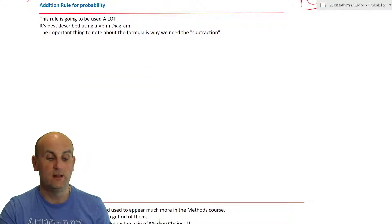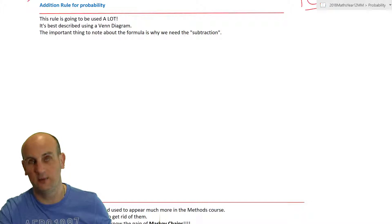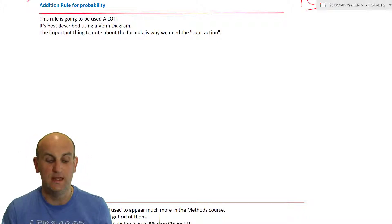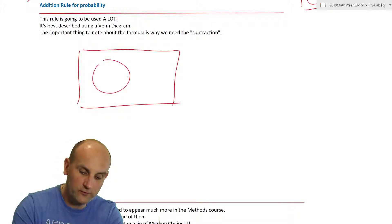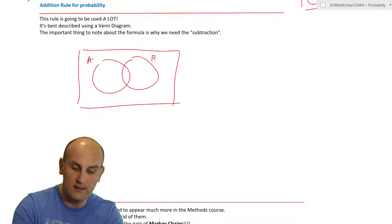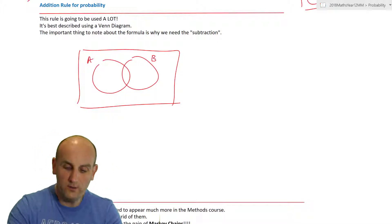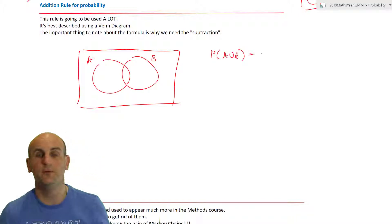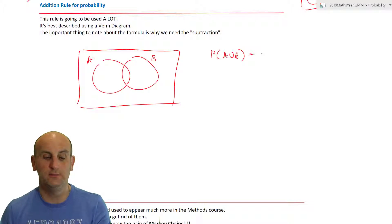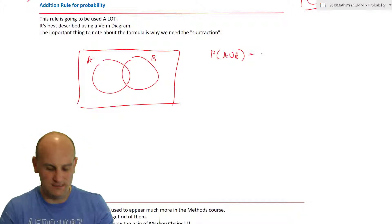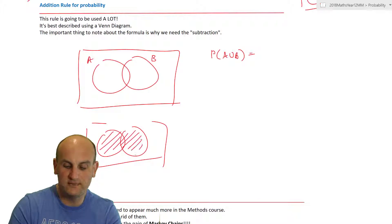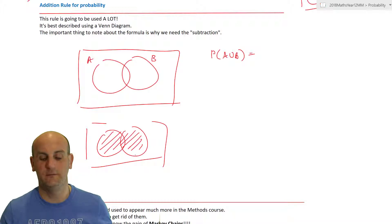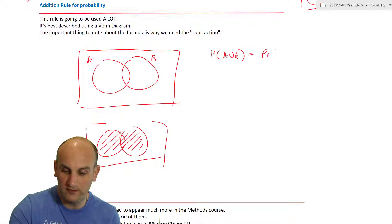The addition rule for probability is fantastic and used a lot. It's best described using a Venn diagram. Draw two overlapping events A and B. If I want to find the probability of A or B happening — P(A ∪ B) — the union covers all of both circles. So I want to start with P(A) plus P(B).